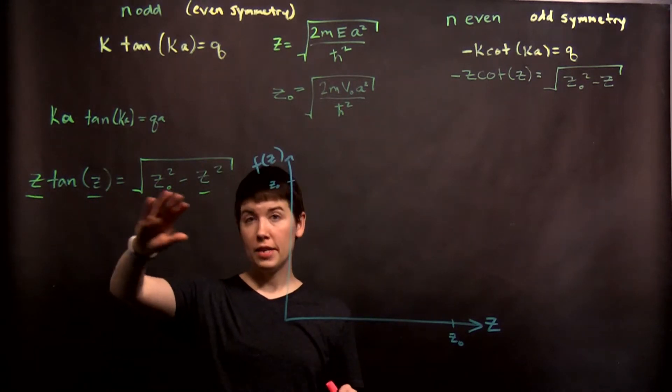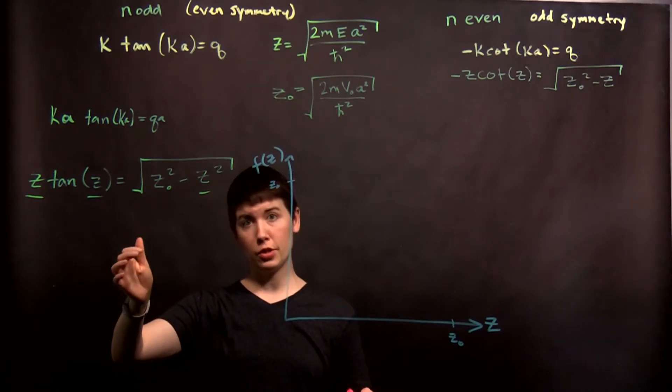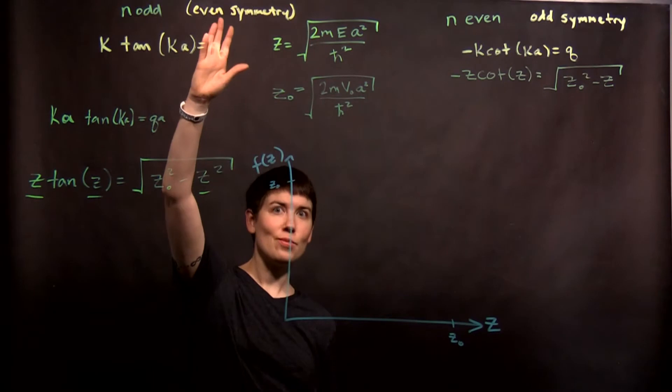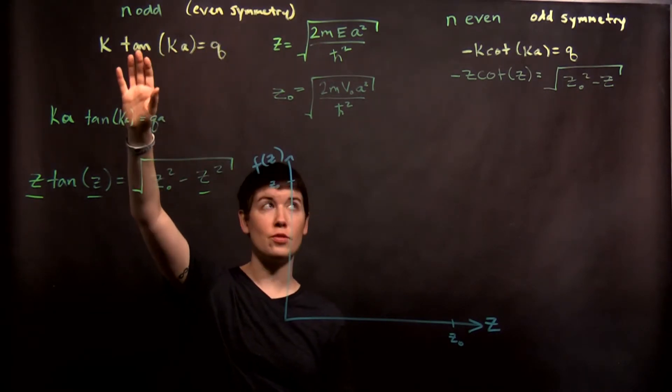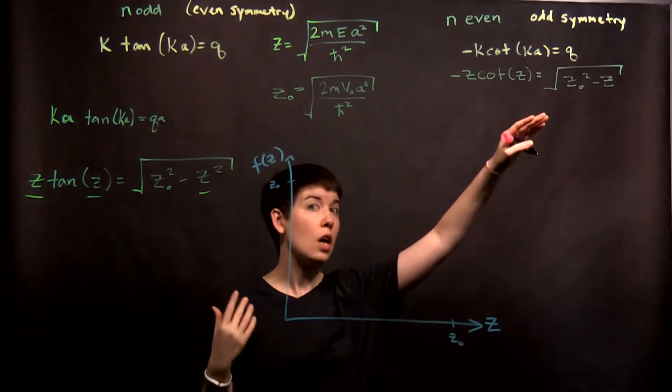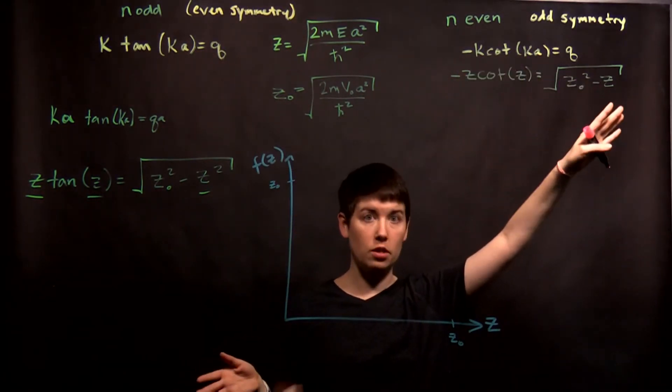So in the last video I went through how we get to this point. We do some change of variables and get to this form which is still a transcendental equation but now that we can solve. Remember this was our even symmetry solutions which have odd values of n. We can do the same for the other class of solutions which were the odd symmetry solutions with an even value of n. So we get to a different transcendental equation.